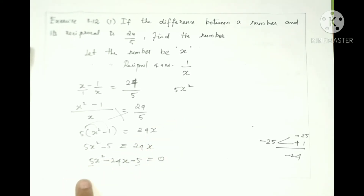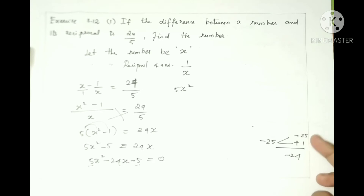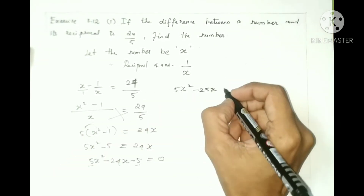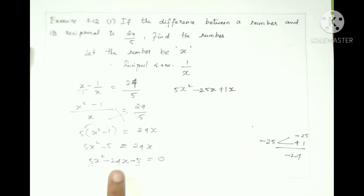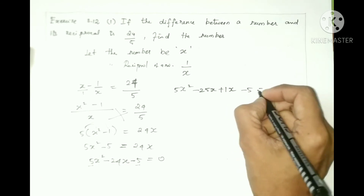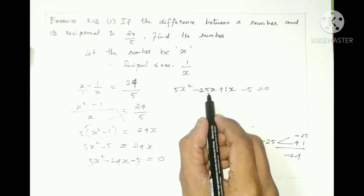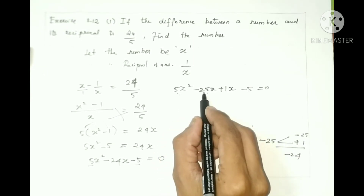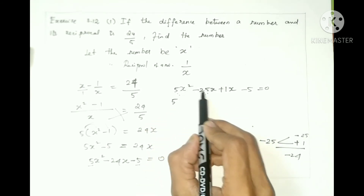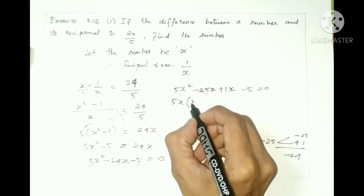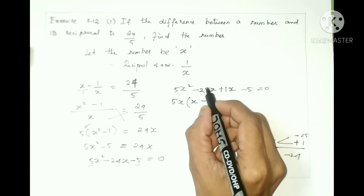So in 5x squared, instead of minus 24x, we put these two numbers: minus 25x plus 1x. So 5x squared minus 25x plus 1x minus 5. Now we split this into two groups and take common factors: from the first two terms, 5x is common, giving 5x(x minus 5).